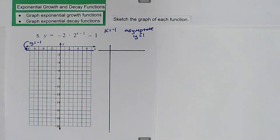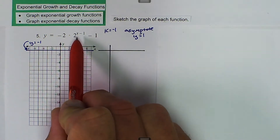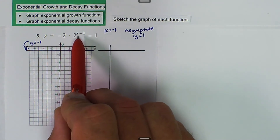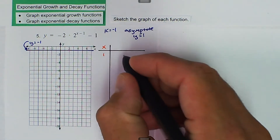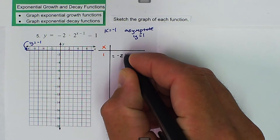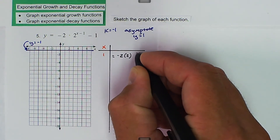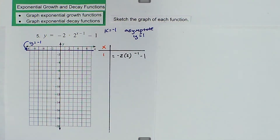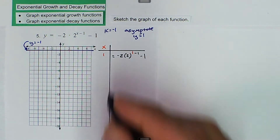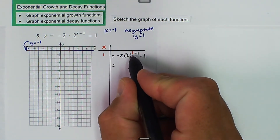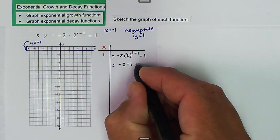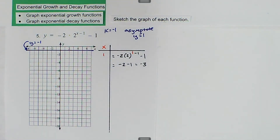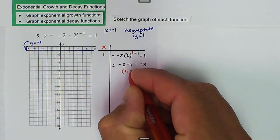Now we want to substitute some values in to figure out what the graph actually looks like, and we really like having 0 in the exponent. In order to get 0 in the exponent, we substitute in 1 for x, and so we get negative 2 times 2 raised to the 1 minus 1, minus 1. Then 1 minus 1 is 0, 2 to the 0 is 1, so we get negative 2 minus 1, which equals negative 3. So we get the ordered pair (1, -3).